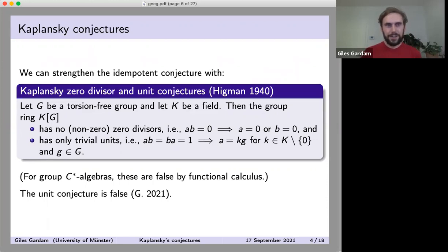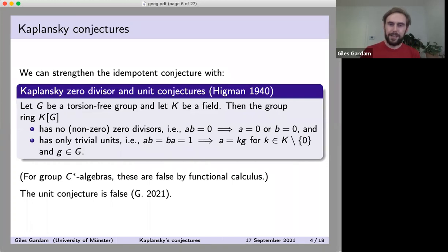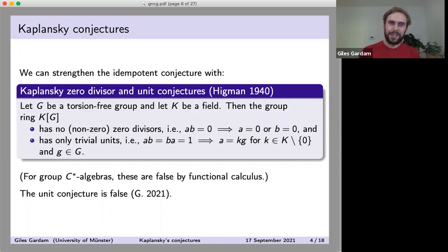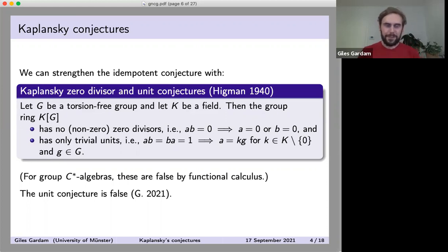These stronger conjectures have the same sort of form as the idempotent conjecture, just ruling out certain elements in the group ring. Let G be a torsion-free group and K a field. The zero divisor conjecture says KG has no non-zero zero divisors: if two elements A and B in the group ring multiply to give zero, then at least one of them must be zero.